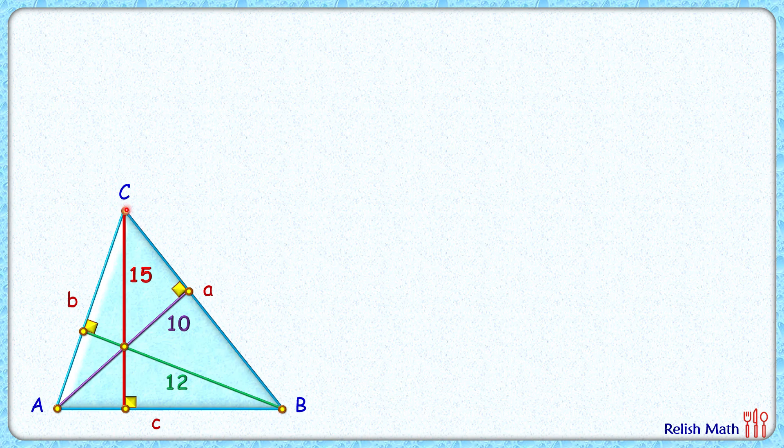If we take BC as base, that is side a as base, then the height will be 10, so area will be half of a times 10. From here we'll get the side length a as 2A divided by 10.